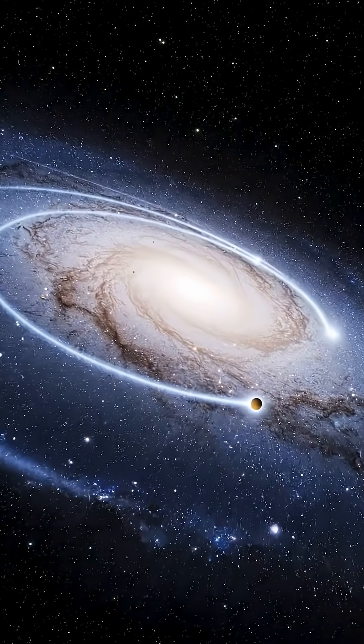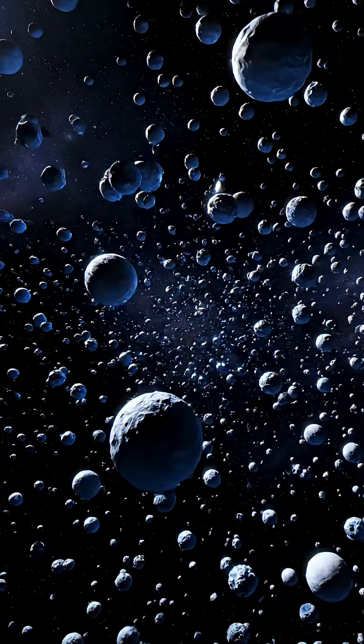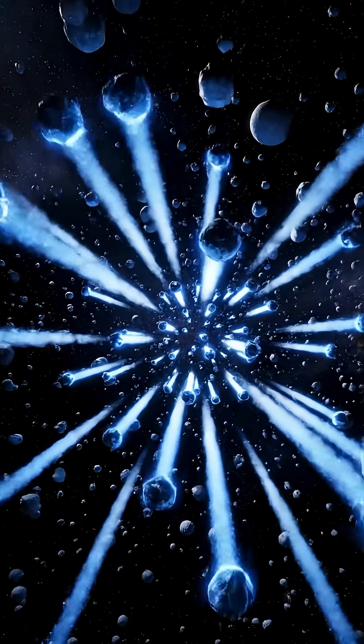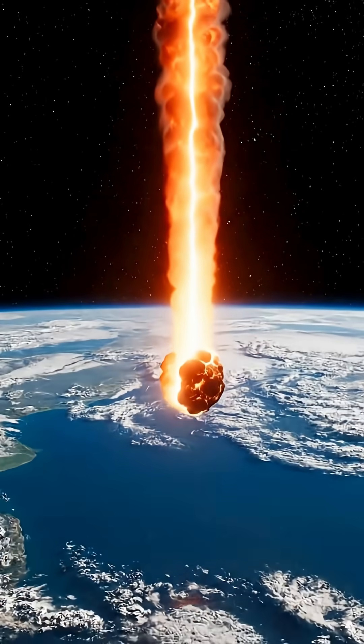When the solar system pushes through, the Oort cloud at its boundary shudders. Comets break loose. Some drive inward on long trajectories and strike Earth with devastating force.